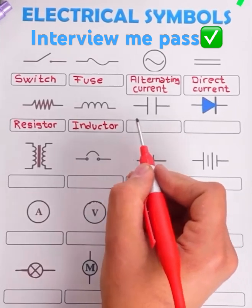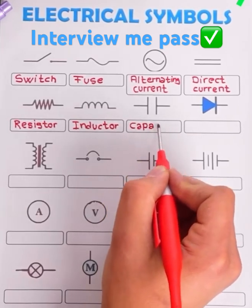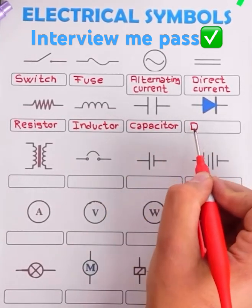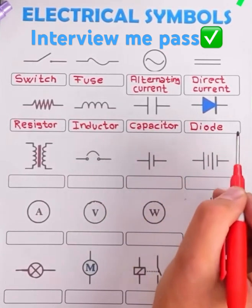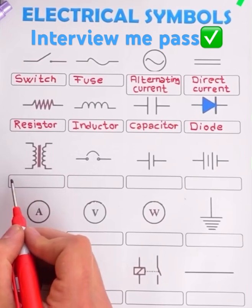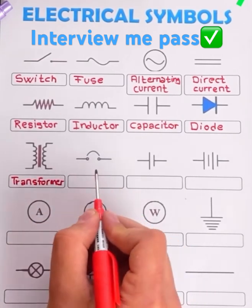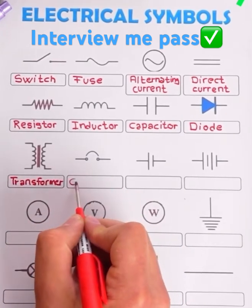This is the symbol of a resistor. It is abbreviated as R. Its unit is Ohms. It is used to resist the flow of current.